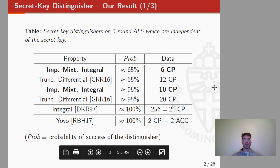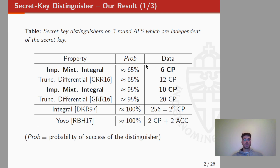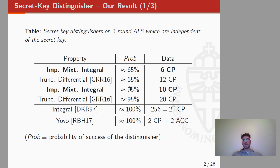Here we have a comparison between our distinguisher and other distinguishers in the literature. I think the most interesting comparison is between our distinguisher and the truncated differential one. Our distinguisher requires half of the data that the truncated differential distinguisher requires for the same probability of success. For example, to distinguish three rounds of AES from a random permutation with probability around 65%, our distinguisher requires only 6 chosen plaintexts, while the truncated differential one requires 12. For a 95% success probability, ours requires only 10 chosen plaintexts while theirs requires 20.